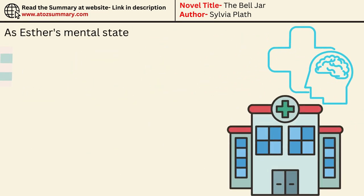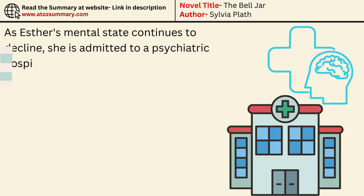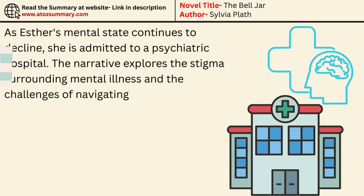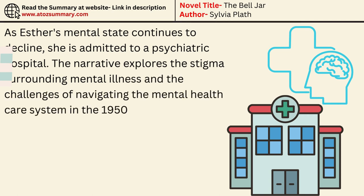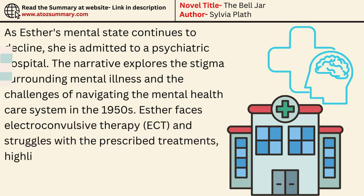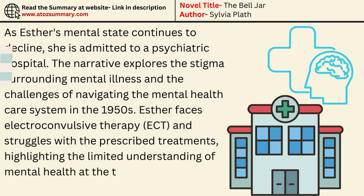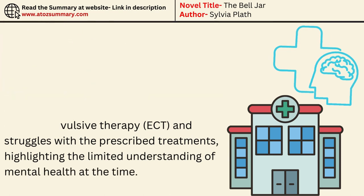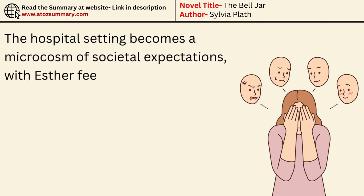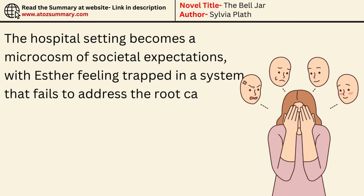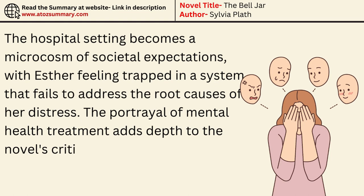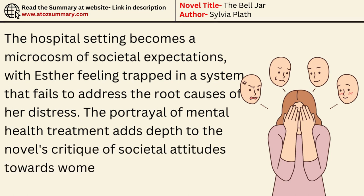As Esther's mental state continues to decline, she is admitted to a psychiatric hospital. The narrative explores the stigma surrounding mental illness and the challenges of navigating the mental health care system in the 1950s. Esther faces electroconvulsive therapy (ECT) and struggles with the prescribed treatments, highlighting the limited understanding of mental health at the time. The hospital setting becomes a microcosm of societal expectations, with Esther feeling trapped in a system that fails to address the root causes of her distress. The portrayal of mental health treatment adds depth to the novel's critique of societal attitudes towards women's mental well-being.